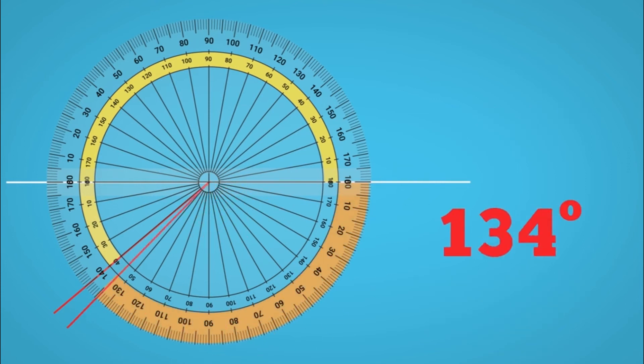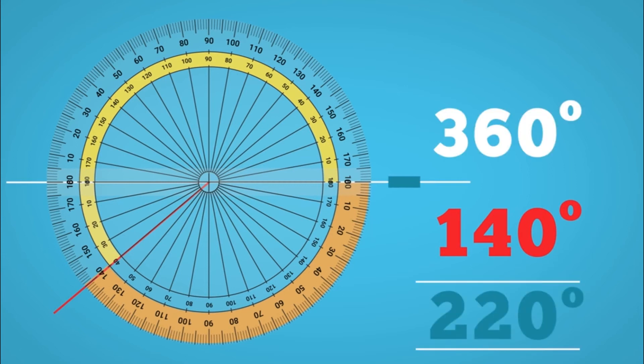A second option, you could measure the missing section instead, this time using the outer scale, and deduct that from 360 to find the part you want.